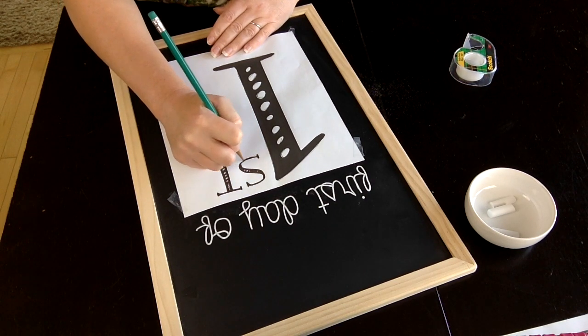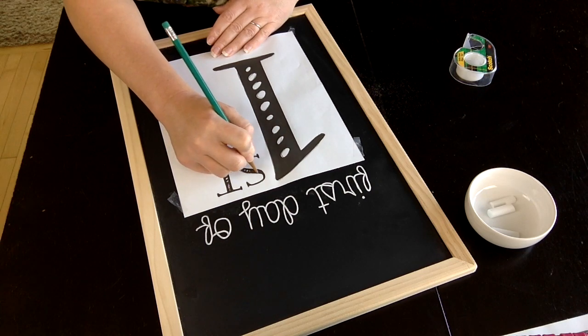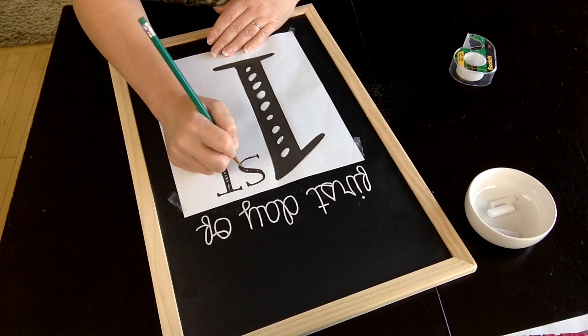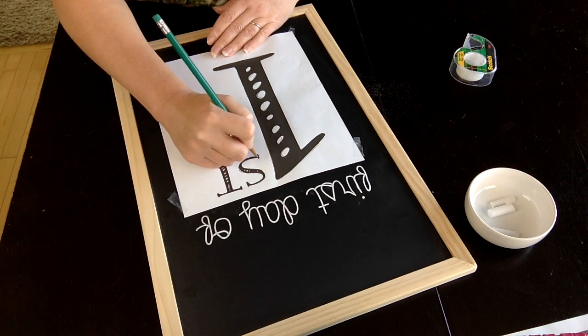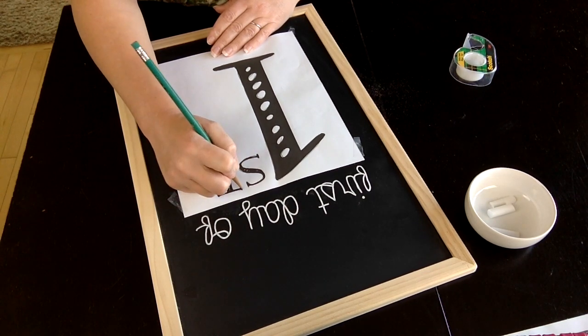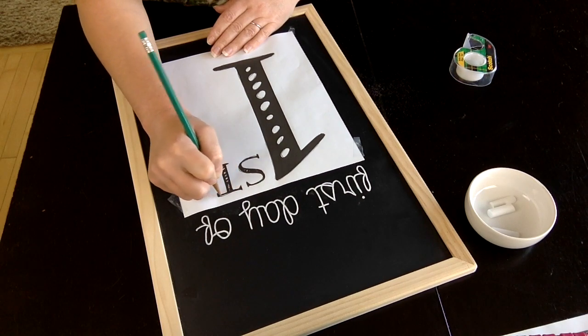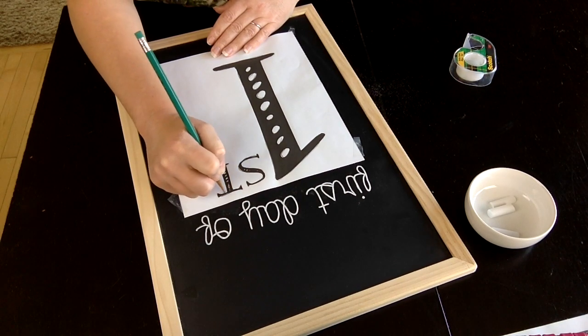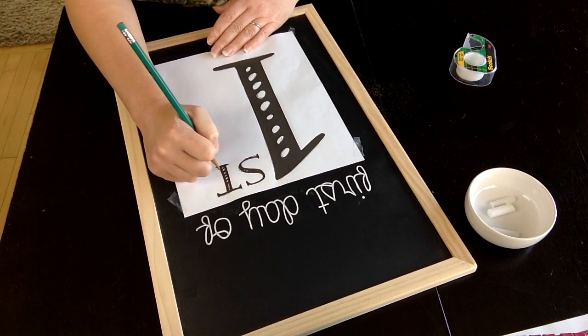Trace around the whole outside of all of the letters and the borders that you are going to want to go over with your chalk pen. It doesn't have to be perfect, which is the great thing about chalk art.